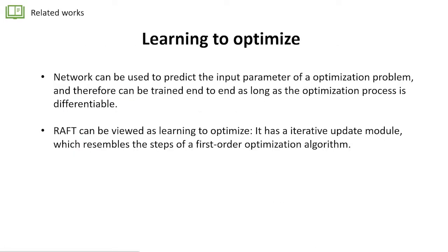Another thing I'd like to mention is learning to optimize. That is, a network can be used to predict the input parameters of an optimization problem, and therefore can be trained end-to-end as long as the optimization process is differentiable. This is a combination between a traditional optimization algorithm and a deep learning-based algorithm. RAFT can also be viewed as learning to optimize because it has this iterative update module, and it resembles the steps of a first-order optimization algorithm.